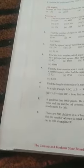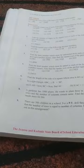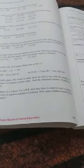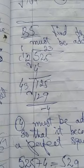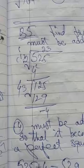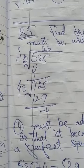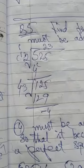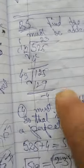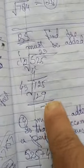Question 5: Find the least number which must be added to each of the following numbers so as to get a perfect square. Also find the square root of the perfect square so obtained. Let's take 525. I'll work through it: two twos are four, so we have 25 here.